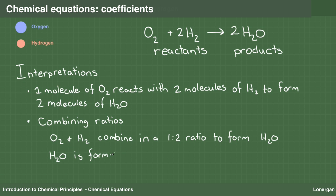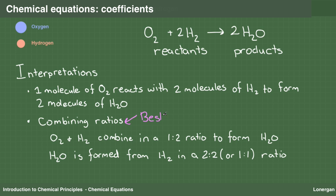H2O is formed from H2 in a two-to-two, which is equivalent to a one-to-one ratio. Because it is the most general, it is best to think of the coefficients in terms of combining ratios. Remember, the one before the O2 is implied.